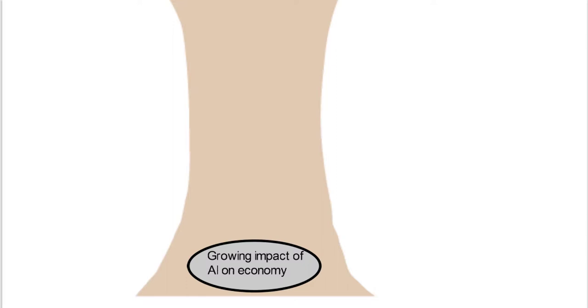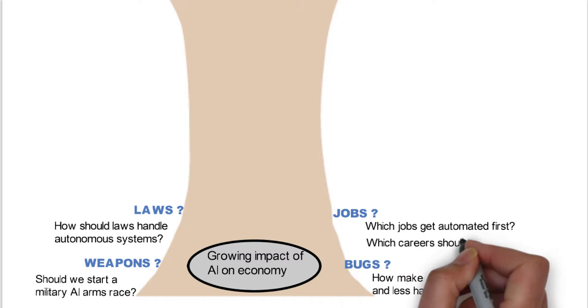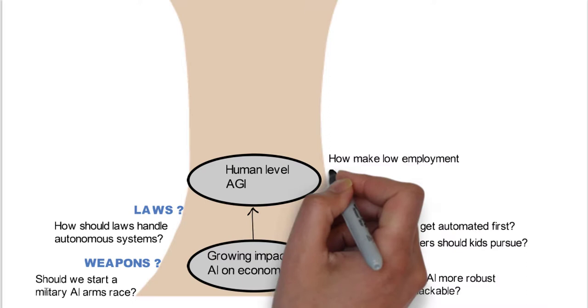So then what he does is kind of outlines what he's going to talk about in the rest of the book. And so he starts to talk about what are the growing impact of AI on the economy. So he talks about four big areas. Weapons, should we start a military arms race? Bugs, how can we make AI more robust and less hackable? Laws, how should laws handle autonomous systems? And jobs, which jobs get automated first? And which careers should kids pursue?